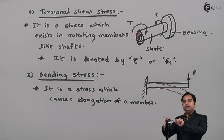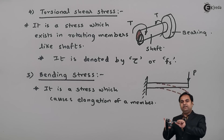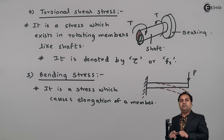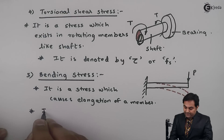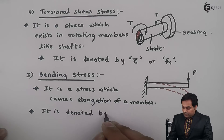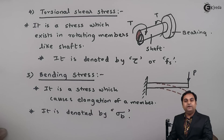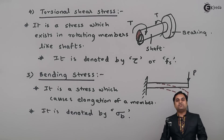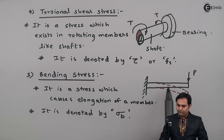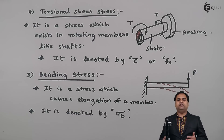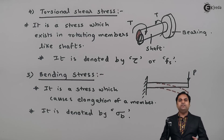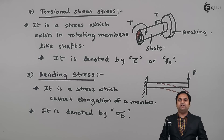Even if I am bending a pin, the length will go on increasing and there is stress developed inside — that stress is called bending stress. Bending stress is denoted by sigma_b, where b stands for bending. Bending stress is mostly seen in beams fixed at one end and free at the other (cantilever beams) or beams supported at both ends, called simply supported beams. In this video we have seen what is meant by the types of stresses, each explained in detail with descriptions.